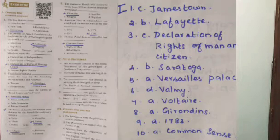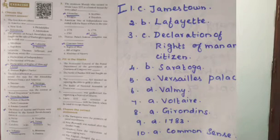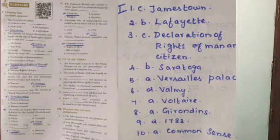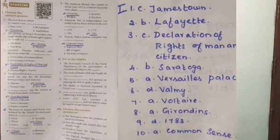Question 1: The first British colony in America was? Answer C — James Turner. Question 2: The pioneer of the French Revolution who fought on the side of Washington against the British was? Answer D — Lafayette.